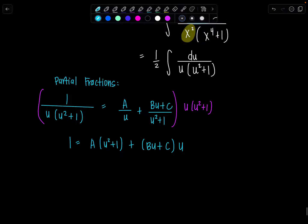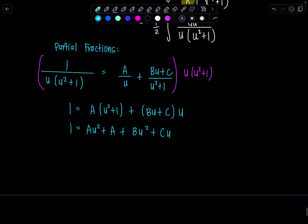Distribute, distribute. So 1 equals Au squared plus A plus Bu squared plus Cu. And then now you're going to solve for A, B, and C by equating the coefficients for like terms on both sides of the equation. So what do I mean? Do you see any u squareds on the left-hand side? No. Do you see u squared on the right? Yes. That means 0 has to equal A plus B, the coefficients of u squared on the right. Do you see any u to the first on the left? No. Do you have u to the first on the right? Yes. I have C times u. So 0 is C.